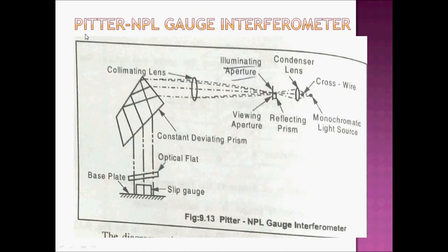Next I'm discussing the Pitter NPL gauge interferometer. We have two different interferometers. Both use similar optics and basic working principles. We use different instruments for flatness and dimension length measurement. The main parts of the gauge interferometer use a monochromatic source.